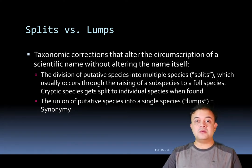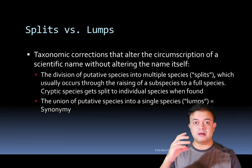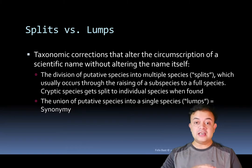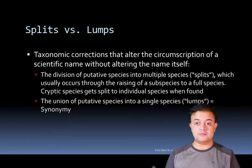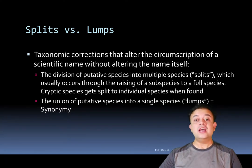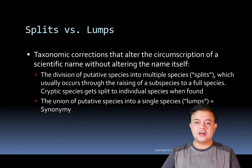Splits and lumps are taxonomic corrections that alter the circumscription of a scientific name without altering the name itself. A split is the division of a putative species into multiple species — as with giraffes — usually by raising subspecies to full species. A lump (synonymy) is the union of putative species into a single species, as with Enteromorpha and Ulva being merged at genus level.